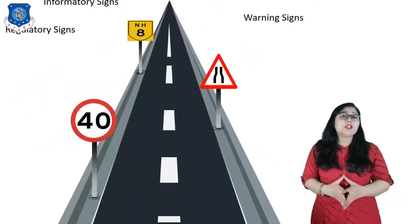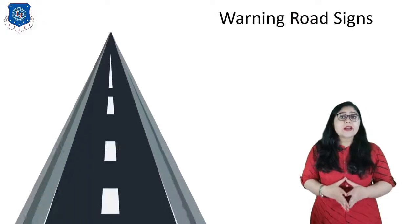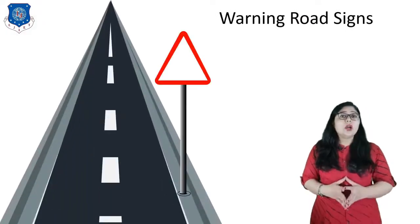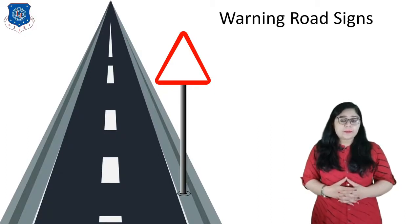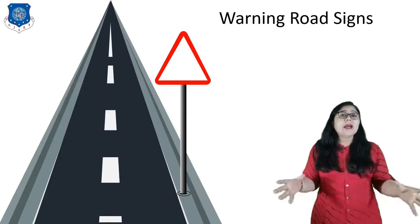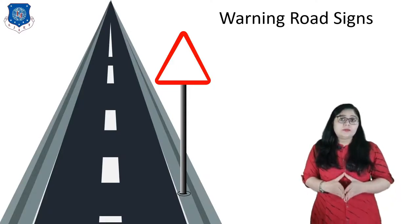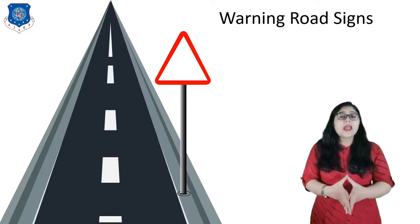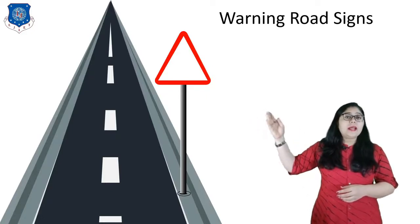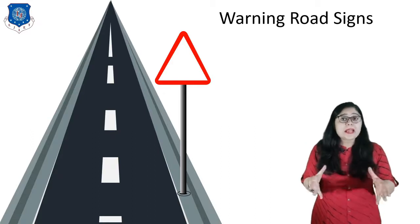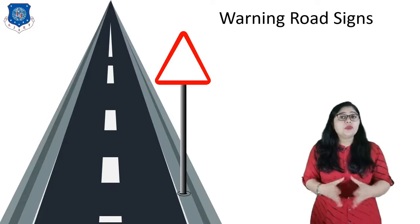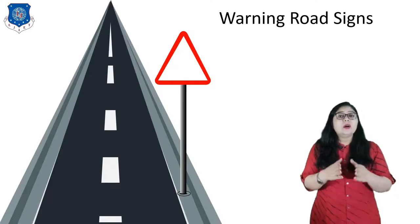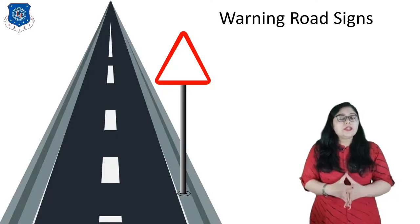Now let's move to the next topic: warning signs. Warning signs are used to warn the road user of certain hazardous conditions that exist on or adjacent to the roadway. Warning signs are of great help in ensuring safety of traffic. They have a white background, red border and black symbols. Signs are to be located at sufficient distances of 120, 90, 60 and 40 meters respectively on national highway, state highway, major district road, ordinary district road, and village road.